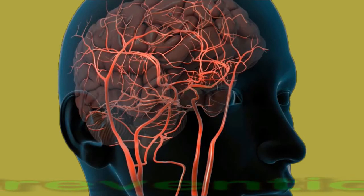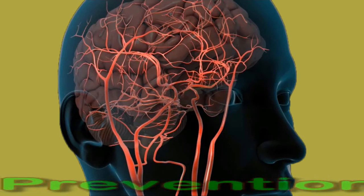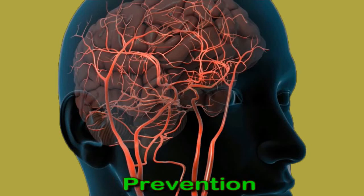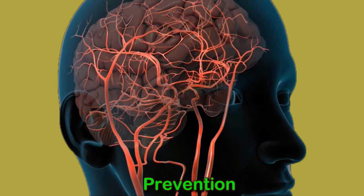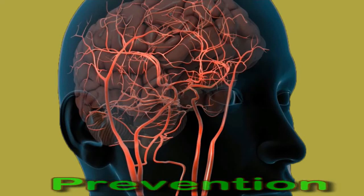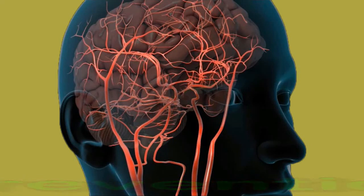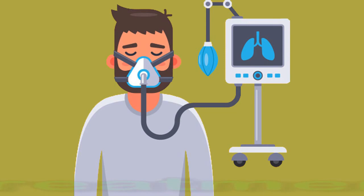It is not possible to prevent all cases of respiratory depression, such as those due to accidents or sudden disease. However, other cases are preventable. Ways to reduce the chances of developing the condition include avoiding sedative medications or taking extra precautions when using them, monitoring children who are taking prescribed medications, avoiding excessive alcohol use, and avoiding or taking extra precautions when using narcotic medications.